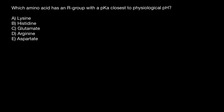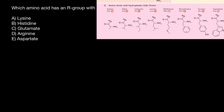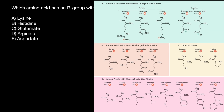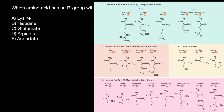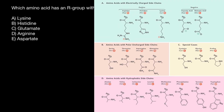First of all, what does pKa mean? Take a look at this table. Here we see 20 amino acids, and the first group would be amino acids whose R group may have a charge.